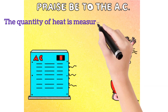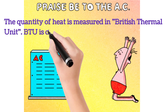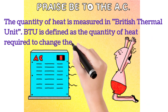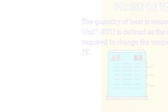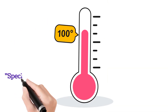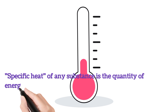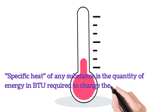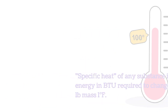The quantity of heat is measured in British thermal units. A British thermal unit is defined as the quantity of heat required to change the temperature of one pound of water one degree Fahrenheit. Specific heat of any substance is the quantity of energy in British thermal units required to change the temperature of a one-pound mass one degree Fahrenheit.